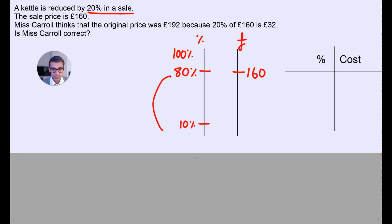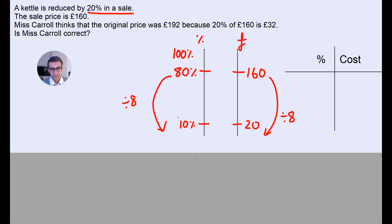The original price is 100%. So let's go down and maybe work out 10% first and see what we find out. So if we divide by 8, we get 10%, and 160 divided by 8. So that's going to give you 20. If we go up now from 10% to 100%, we're going to multiply by 10, and we're going to multiply 20 by 10.